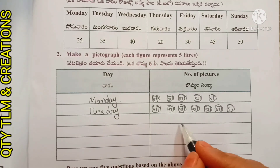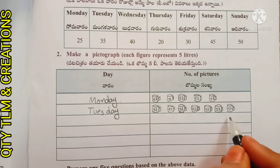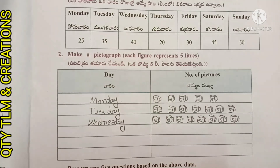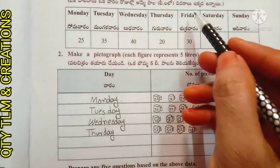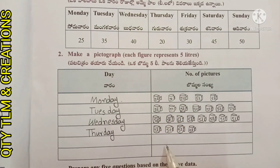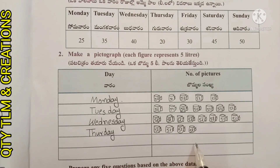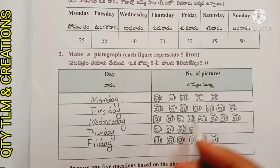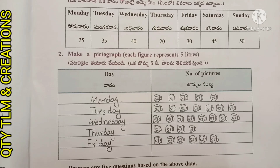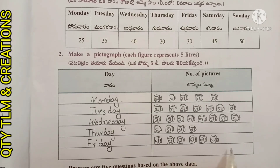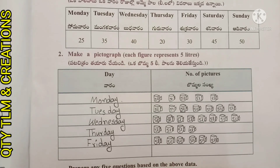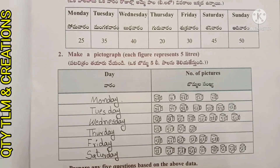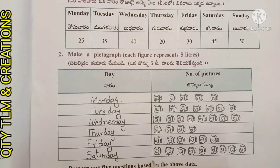Thursday is 20 liters, so we draw four pictures of five liters. Saturday is 45 liters, so we draw nine pictures of five liters. Sunday is 50 liters, so we draw ten pictures of five liters each.